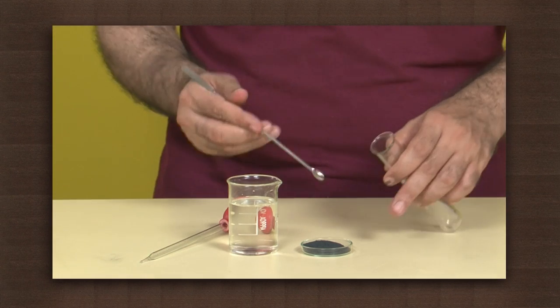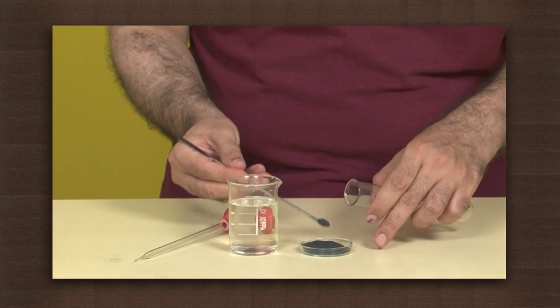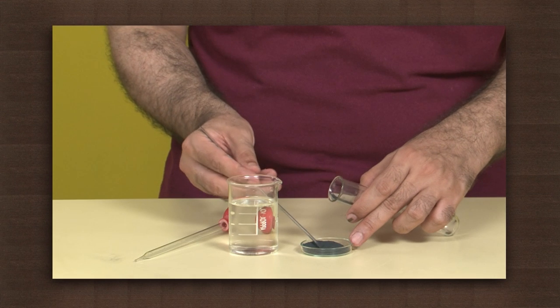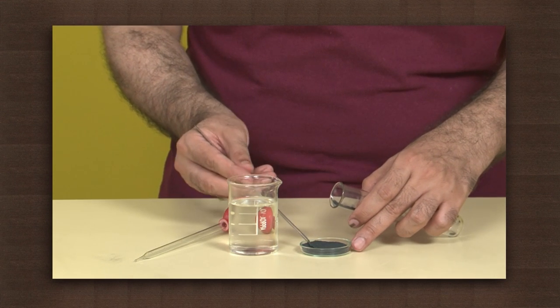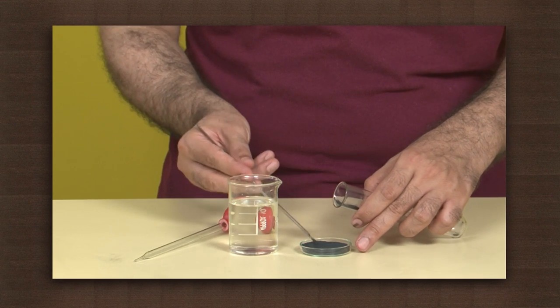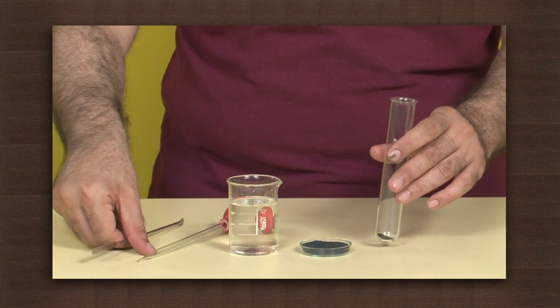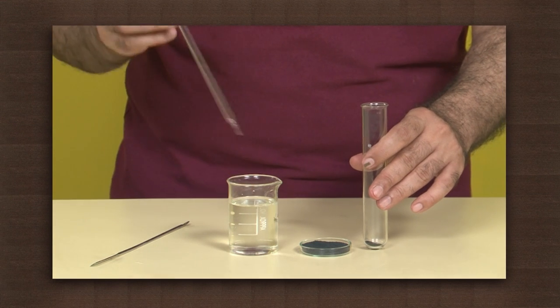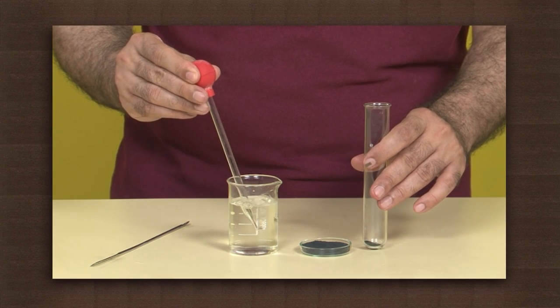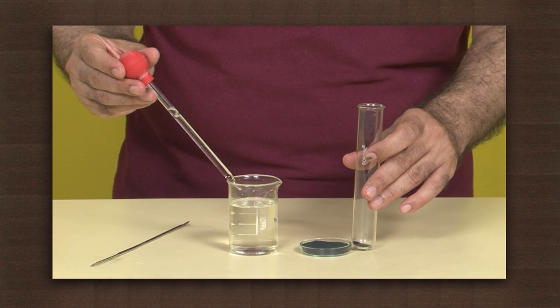Take some copper oxide in the test tube. Add dilute hydrochloric acid to it, drop by drop, and shake.